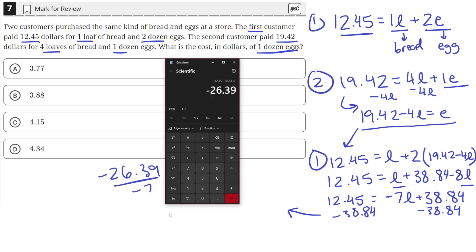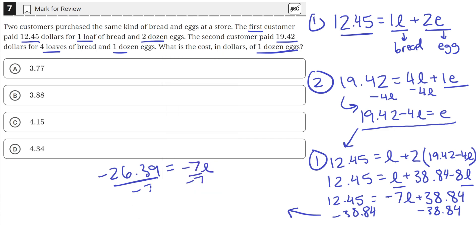This quantity here divided by 7 is negative 3.77. But since it's two negatives, the negatives cancel out and we're left with a positive. That's equal to L. Now, we have to be careful because this is the price of a loaf of bread, which is answer choice A, but the question asks for the cost of a dozen eggs.